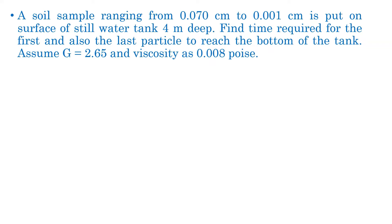Next question: a soil sample ranging from 0.070 cm to 0.001 cm is put on the surface of a still water tank 4 meters deep. Find the time required for the first and also the last particle to reach the bottom of the tank. G is 2.65 and viscosity is 0.008 poise.